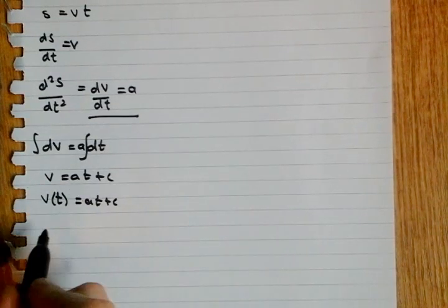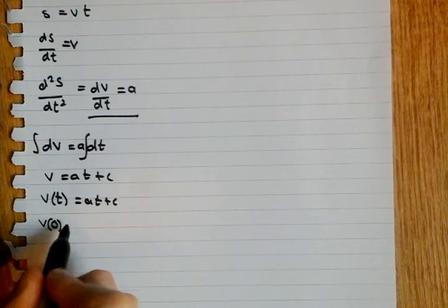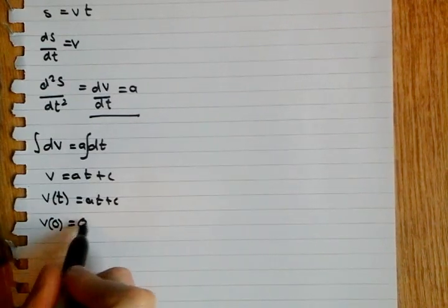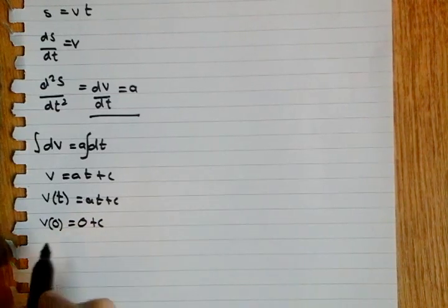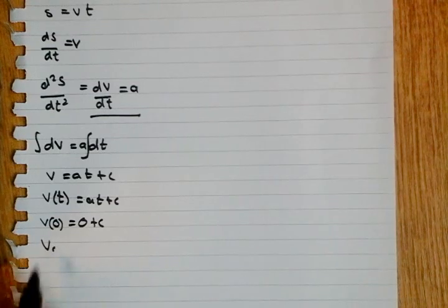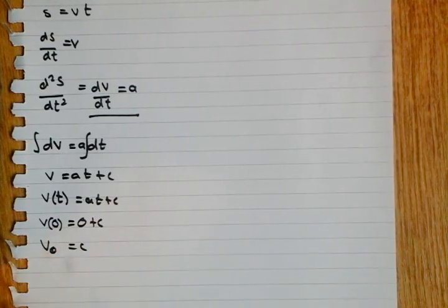So if we have a time 0 for initial condition, V of 0, we get the AT goes to 0 plus C. Now, the initial condition V of 0 can be denoted as V naught, little naught, the initial velocity, is equal to C.